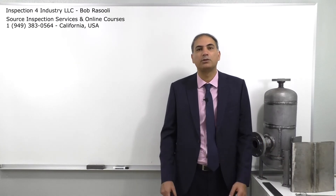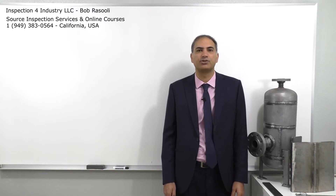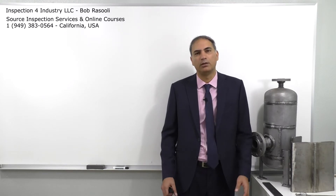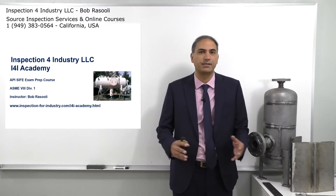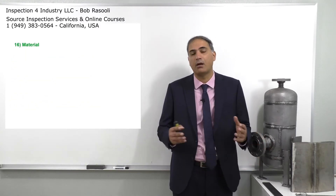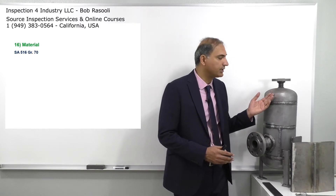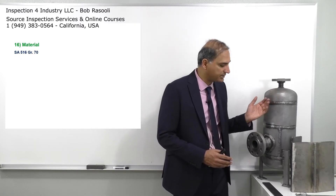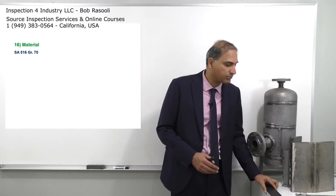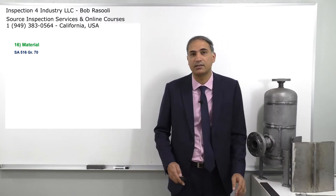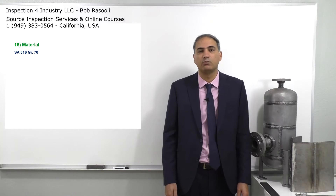In this segment we are going to discuss the material requirements in ASME Section 8 Division 1. We're going to use an example — SA516 Grade 70 — which is a very common pressure vessel material. This little plate here is SA516 Grade 70, and we're going to discuss what ASME Section 8 Division 1 requires regarding the material.